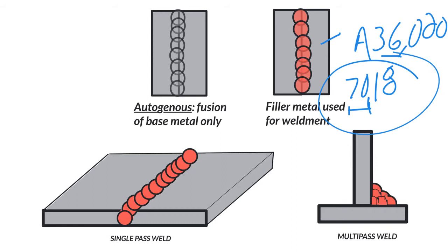We have either single-pass welds or multi-pass welds, depending on what industry you get into. People doing sheet metal work will probably do a lot of single-pass welds. Get into big industrial work such as ironworker or pipe fitter, and they're probably going to deal with multi-pass welds — they've got a root, a fill, and a cap. The cap could be one bead, three beads, five beads, ten beads. Just know that there are single-pass and multi-pass welds.